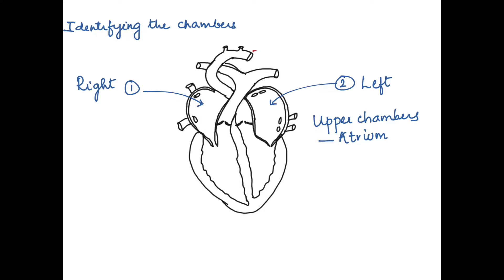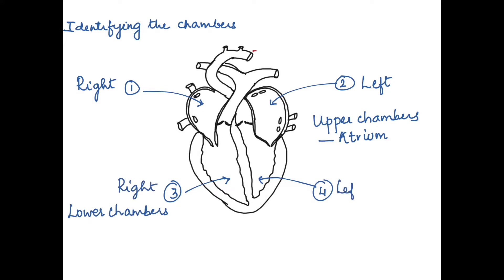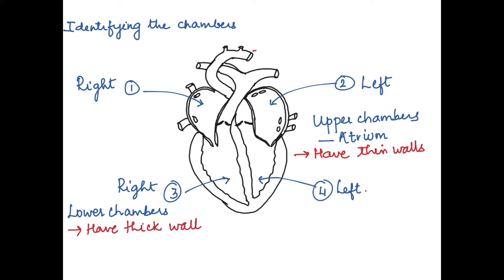The upper chambers are called the atrium or auricle, so we have the right atrium and the left atrium. The lower chambers are called ventricles, so we have the right ventricle and the left ventricle. The upper chambers can be identified by having thin walls as compared to the lower chambers.